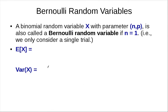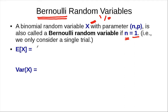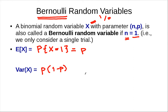There is a special case of the binomial random variable where you only perform a single trial. This is called the Bernoulli random variable, named after Bernoulli, who is a pioneer in probability theory. For this case, x is either 1 or 0 — if successful, it's 1; otherwise it's 0. The expected value of x is p, since x is an indicator random variable, and the variance is p times 1 minus p.